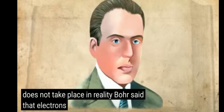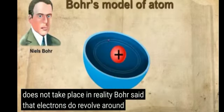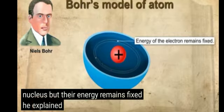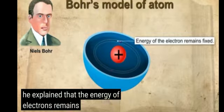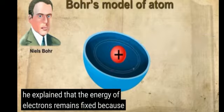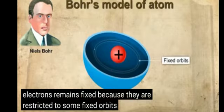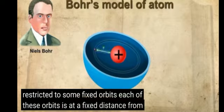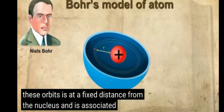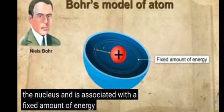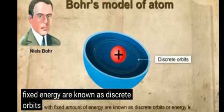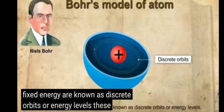Bohr said that electrons do revolve around the nucleus, but their energy remains fixed. He explained that the energy of an electron remains fixed because they are restricted to some fixed orbit. Each of these orbits is at a fixed distance from the nucleus and is associated with a fixed amount of energy. These orbits with fixed energy are known as discrete orbits or energy levels.